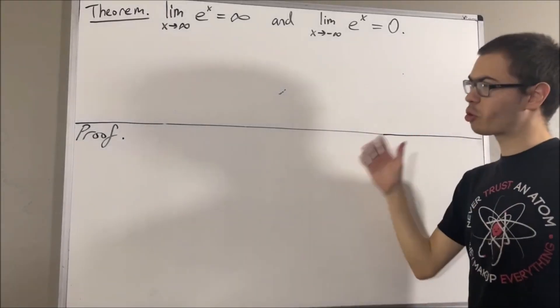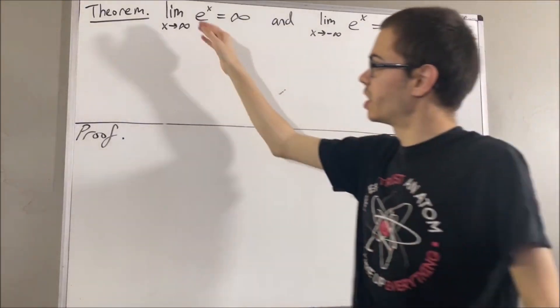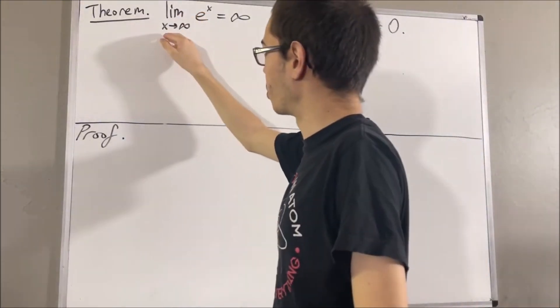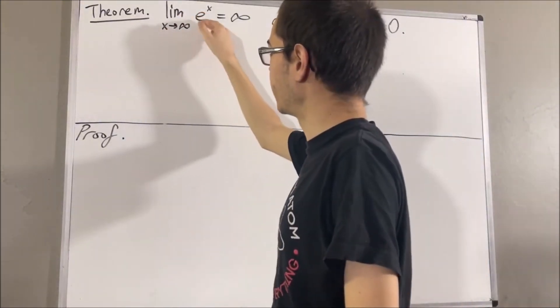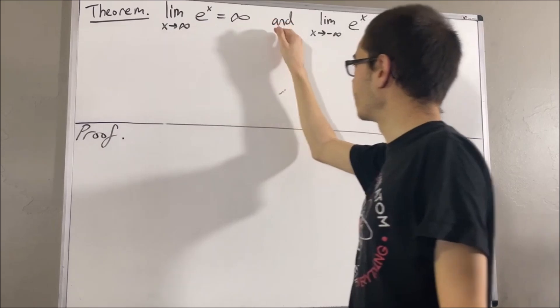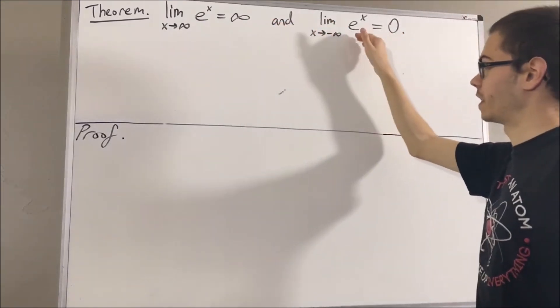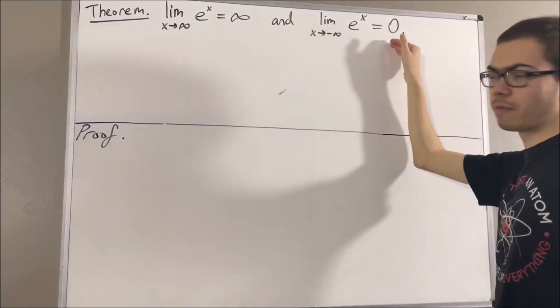In this video, we are going to prove the following theorem: the limit as x approaches infinity of e to the x is equal to infinity, and the limit as x approaches negative infinity of e to the x is equal to zero.